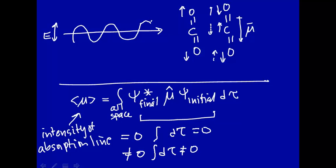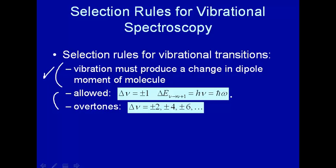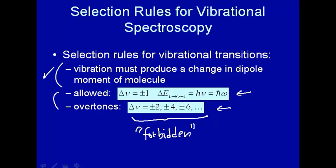You can use symmetry arguments or odd/even function arguments to argue that this integral has to be equal to zero. If you can't find an argument why it must be zero, then it doesn't have to be zero. However, you do find that there are some transitions called forbidden transitions — and for vibrational spectroscopy these are called overtones. These forbidden transitions are allowed because the approximations used in deriving this selection rule — namely the harmonic oscillator approximation — are not absolutely correct, so other transitions are allowed.